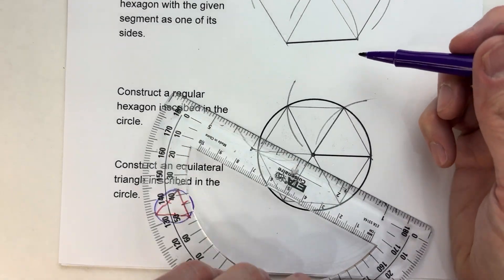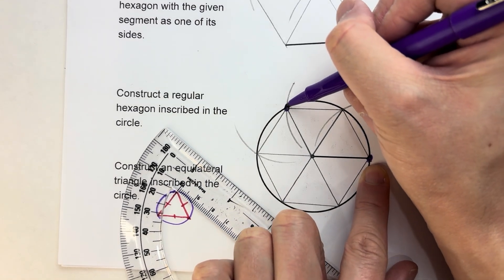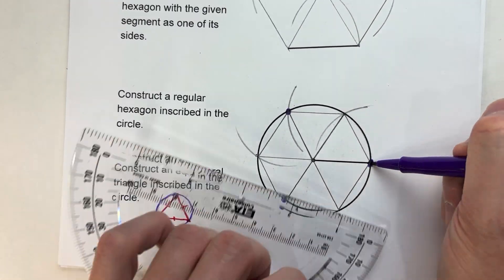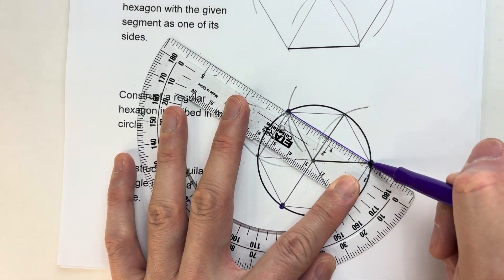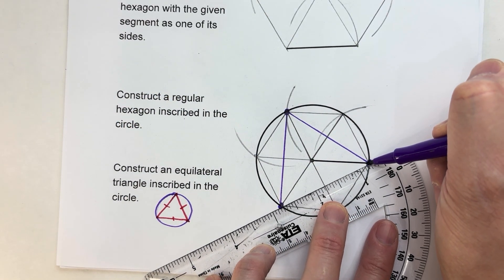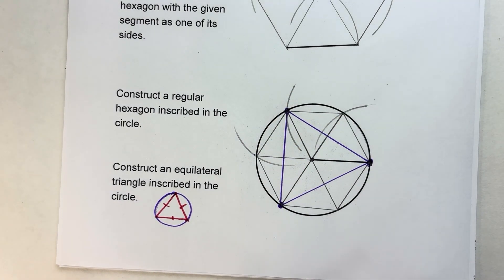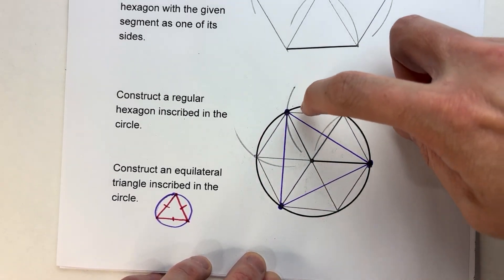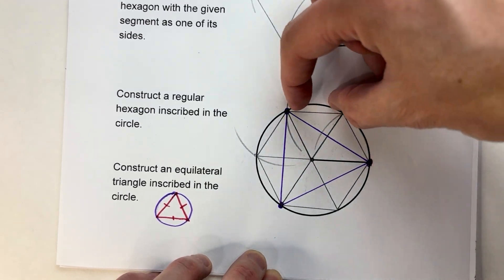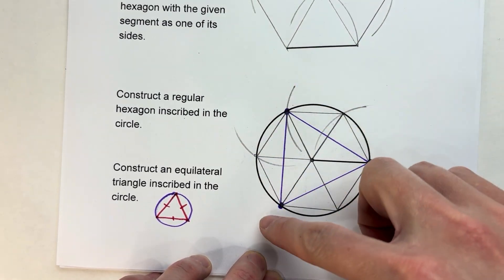I'll do it in purple so you can see it well. I'm going to connect this point, skip this one, go to this one, skip this one, go to this one. You see how I just picked every other point on the circle. Notice what I end up having: an equilateral triangle inscribed within that circle. We know it's equilateral because it's spaced out exactly the same. The hexagon was spaced out every one-sixth of the circle. Now we're just taking two of those, so it's one-third of the circle.